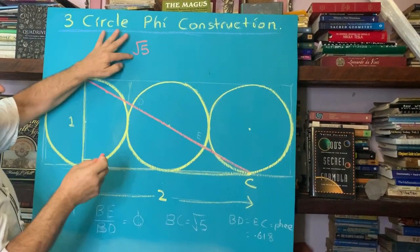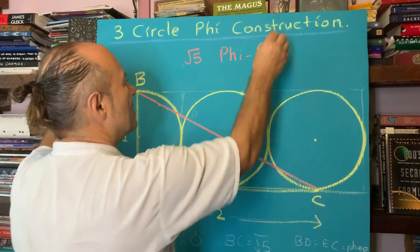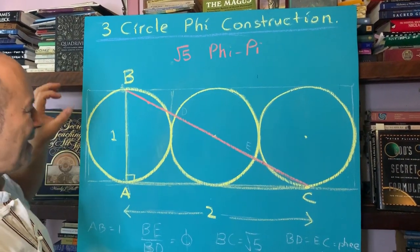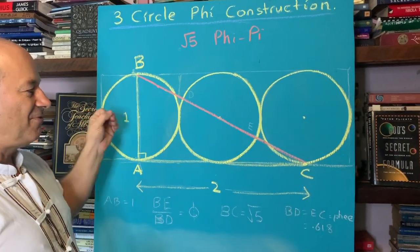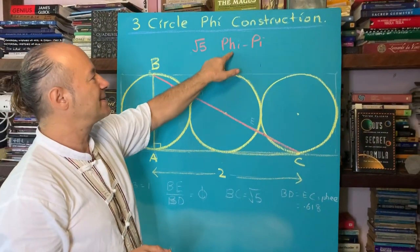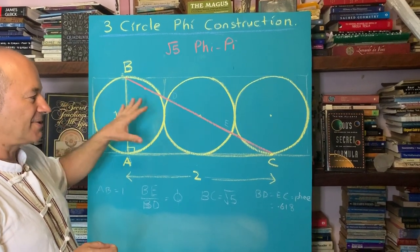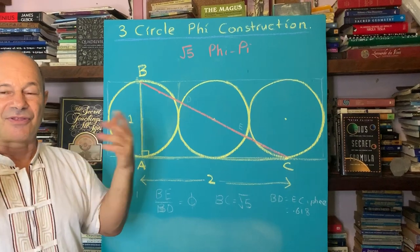And this is critical for what we call the Phi-Pi relationship. By showing that the golden ratio is in the harmonics of the circle, we're going to establish that the true value of Pi must be based on Phi. This is why this is a very psychoactive diagram.